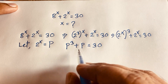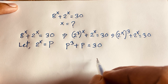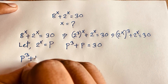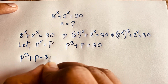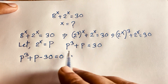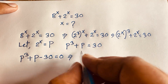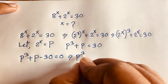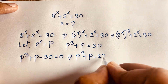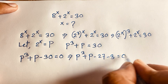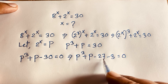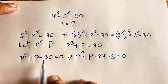We need to find the value of p. This equation becomes p³ + p − 30 = 0. I move the 30 to this side so it becomes negative. Notice that 27 + 3 = 30, and −27 − 3 = −30, so we can write p³ + p − 27 − 3 = 0.